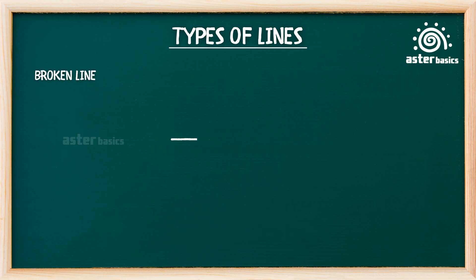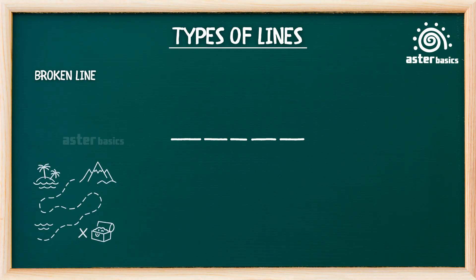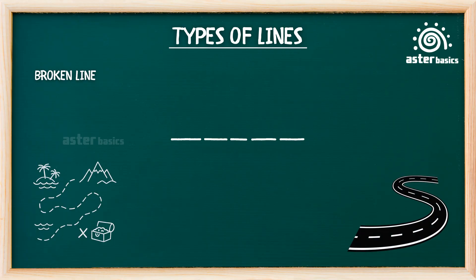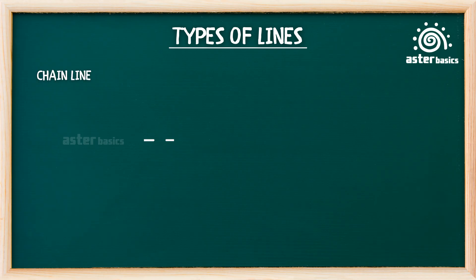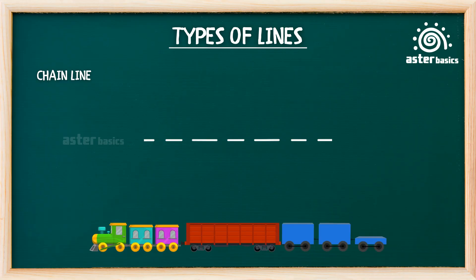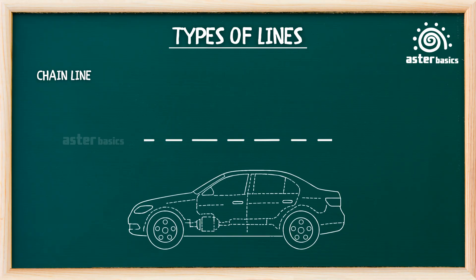Broken line: a line made of tiny dashes with little gaps in between — it looks like someone cut a straight line into small pieces. You might see a broken line on a treasure map to show where to walk, or on the road where it tells cars when they can safely change lanes. Chain line: a pattern of long dash, short dash, long dash repeating — like a train with big and small carriages. It's used in special drawings like blueprints to show something important or hidden inside a machine. A chain line helps engineers show hidden parts — like fuel pipes or airbags — in a blueprint without opening the real car.